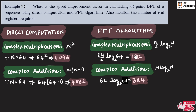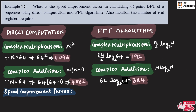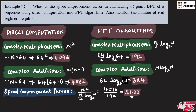Here you can observe the number of steps required for complex computations in both the direct method and the fast Fourier algorithm — the number of computations has been greatly reduced, which gives an advantage to the FFT in computing the DFT. The speed improvement factor is given as n²  divided by (N/2)·log₂N. Substituting n equals 64, the numerator is 4096 and the denominator is 192, giving a speed improvement factor of 21.33. This means direct computation is 21.33 times slower than the FFT algorithm.